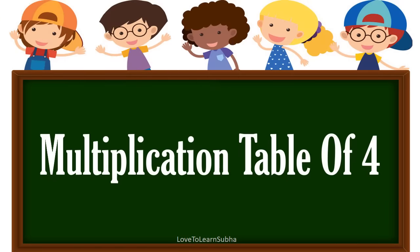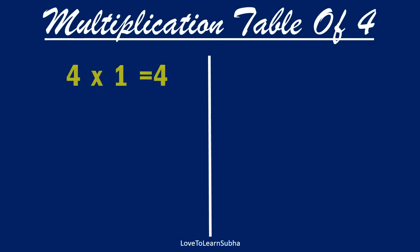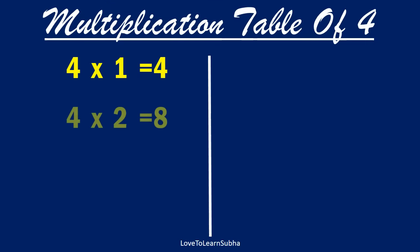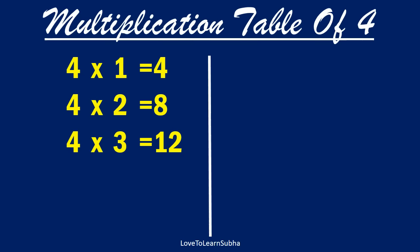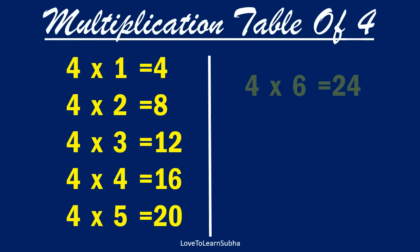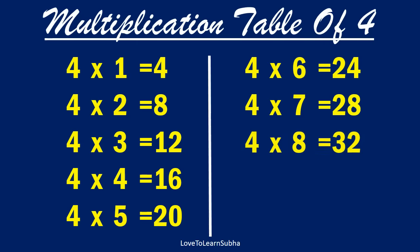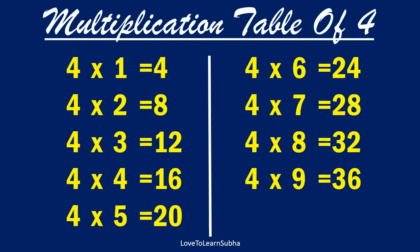Multiplication table of 4. 4 one is 4, 4 two is 8, 4 three is 12, 4 four is 16, 4 five is 20, 4 six is 24, 4 seven is 28, 4 eight is 32, 4 nine is 36, 4 ten is 40.